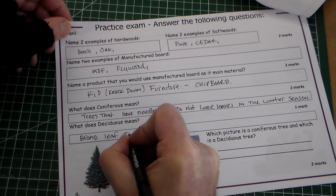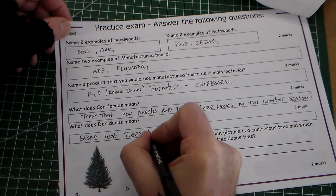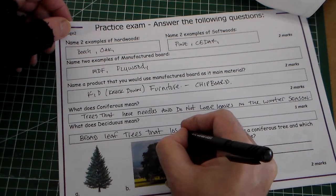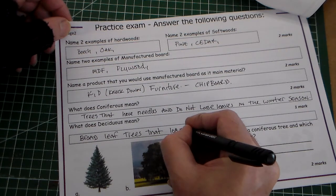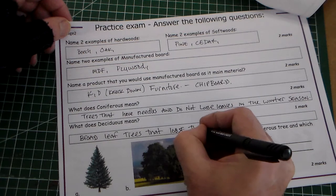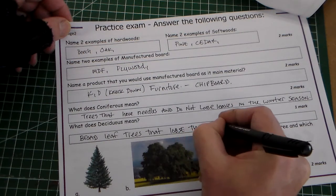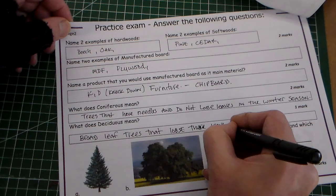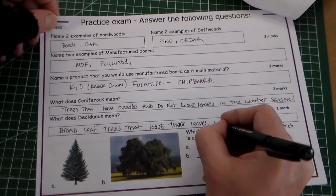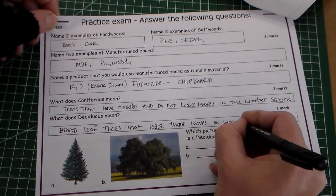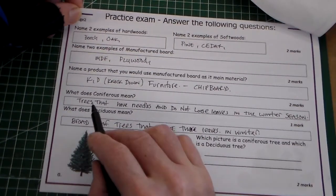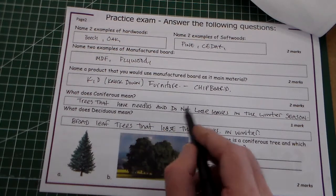So coniferous is trees that have needles and do not lose leaves in the winter season. Deciduous means broadleaf trees that lose their leaves in winter.